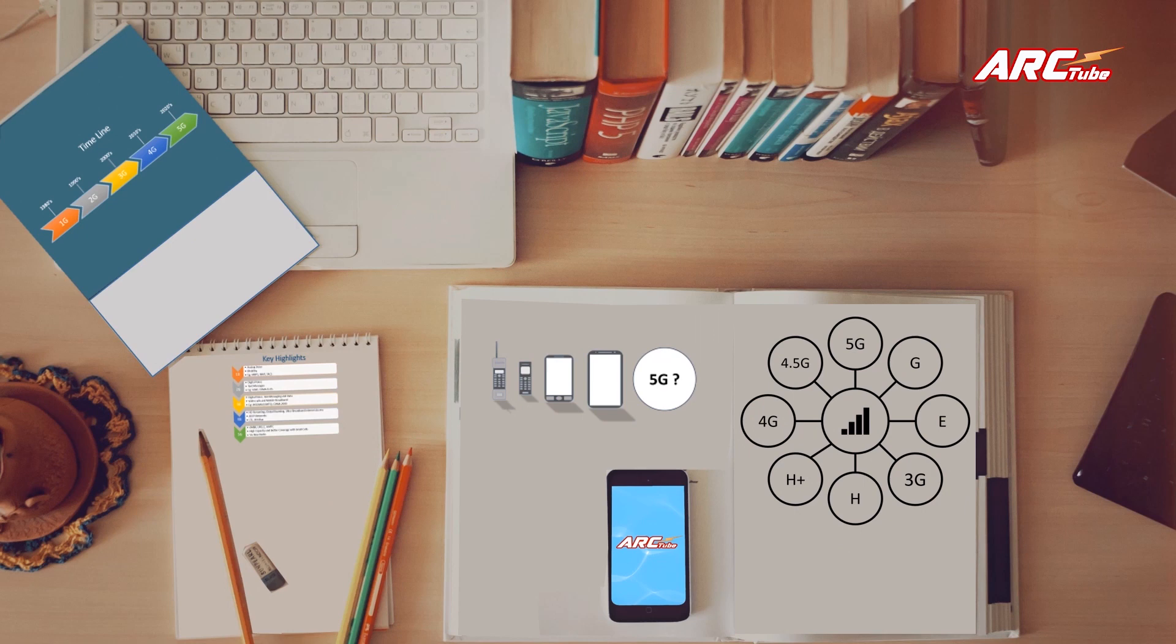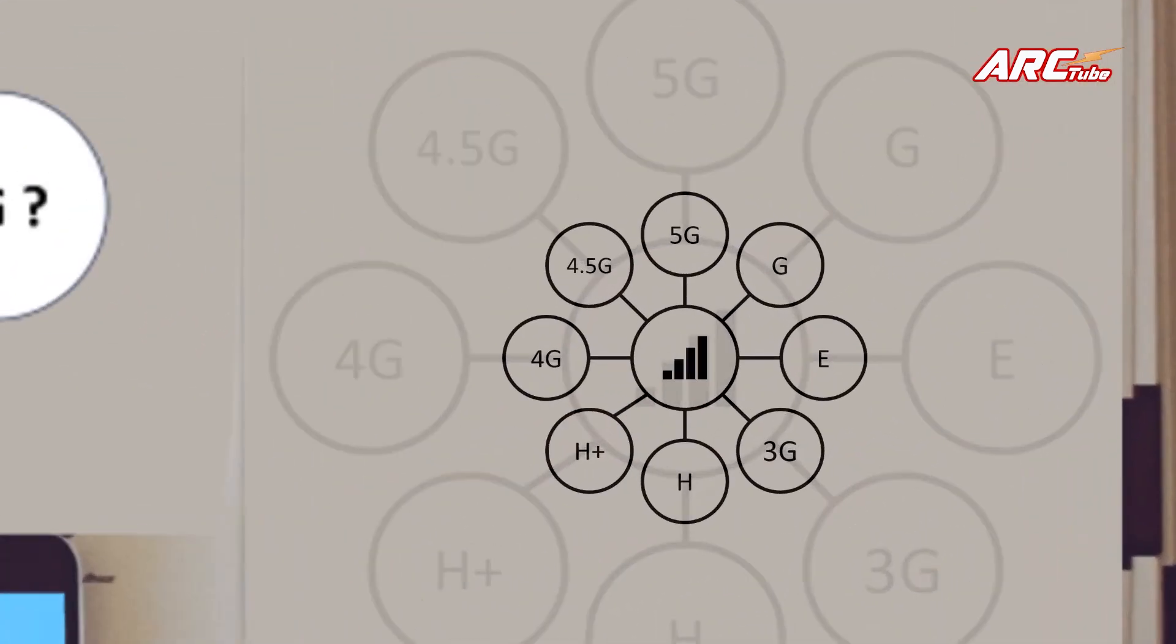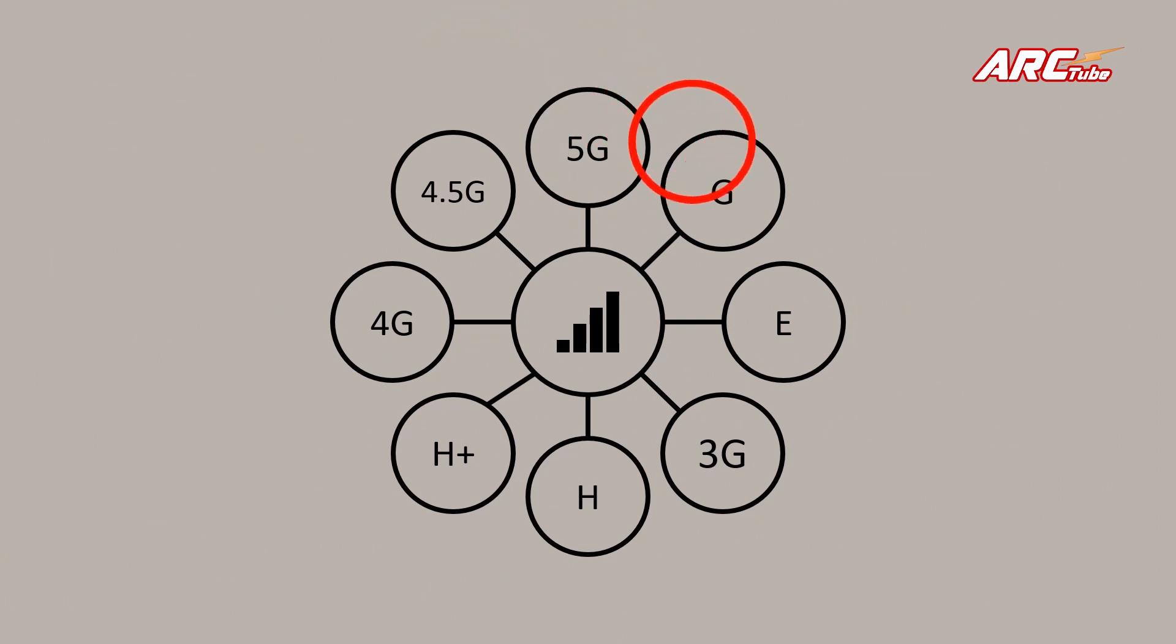Finally, let's see what these letters and numbers next to signal bars stand for. G stands for GPRS, or in other words, General Packet Radio Service. It is one of the frontiers of the evolution of mobile data communication towards what we use today. It is a 2G technology, and in most of the cases we refer to it as 2.5G.